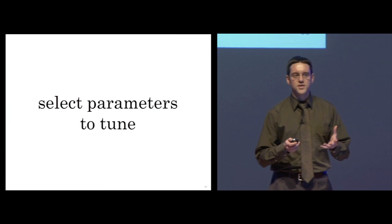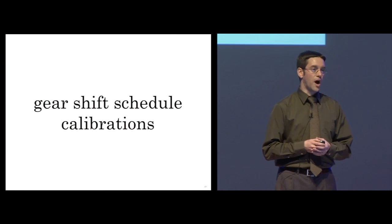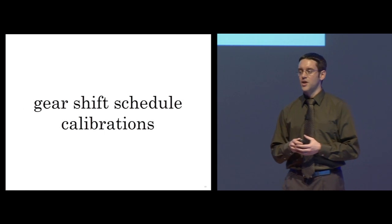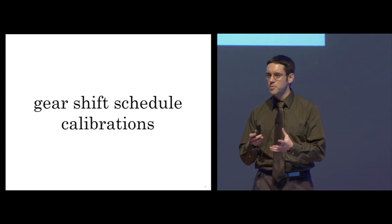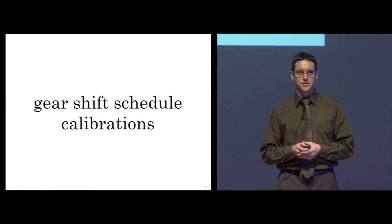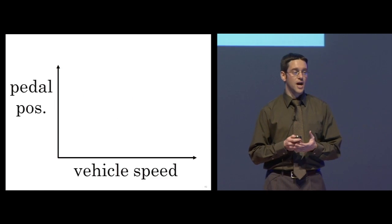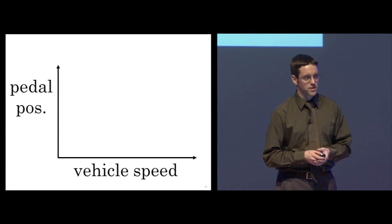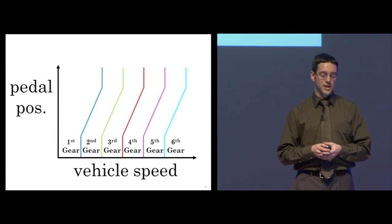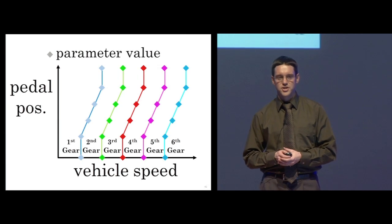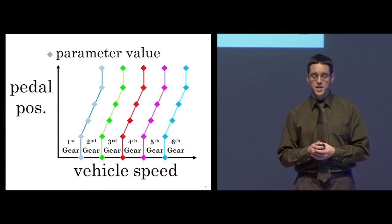An example of a set of parameters that we could tune are the gear shift schedule calibrations. These are the values that are used by the controller to determine when the transmission should change gears. Based on the speed that the vehicle is traveling and how hard the driver is stepping on the gas pedal, the control algorithm selects which gear to use. This example table of calibrations uses about 40 different parameters.